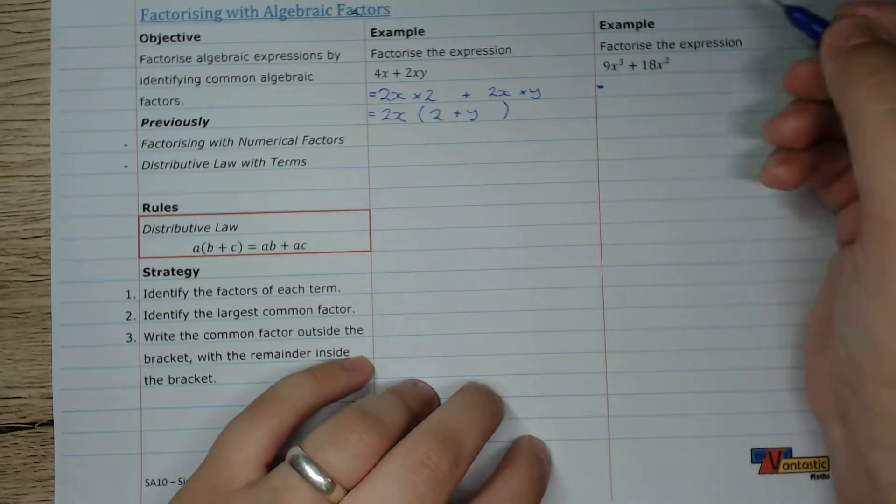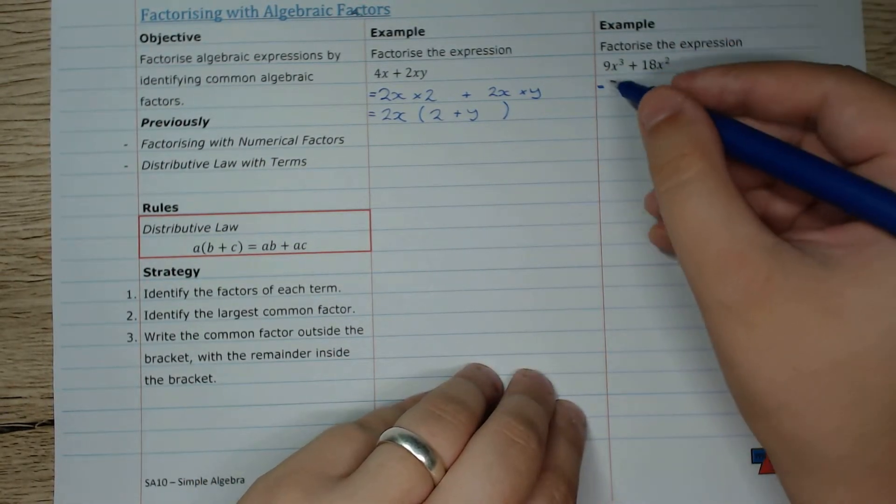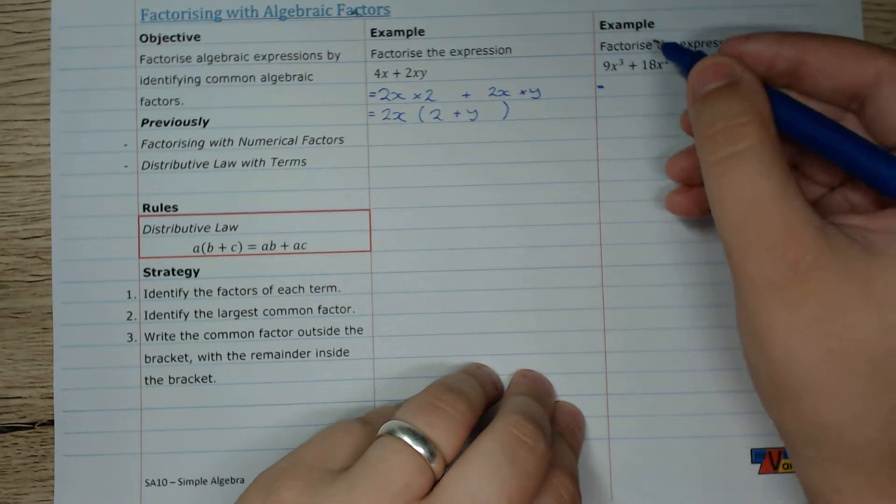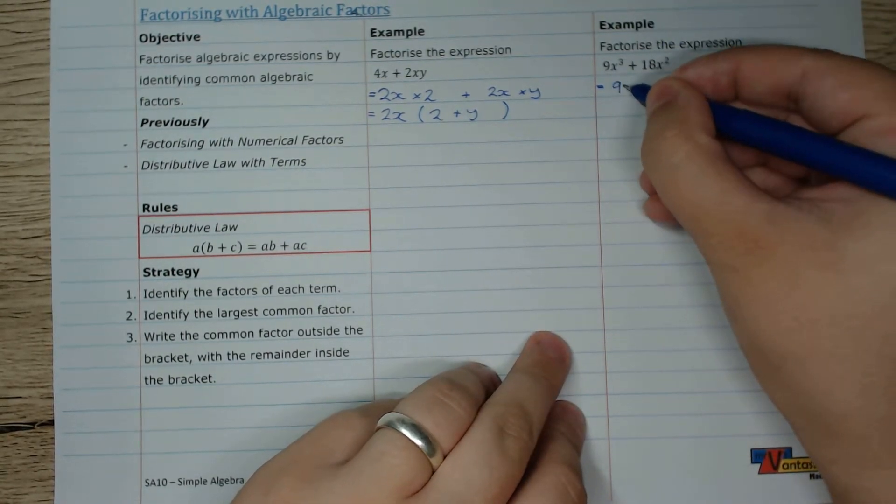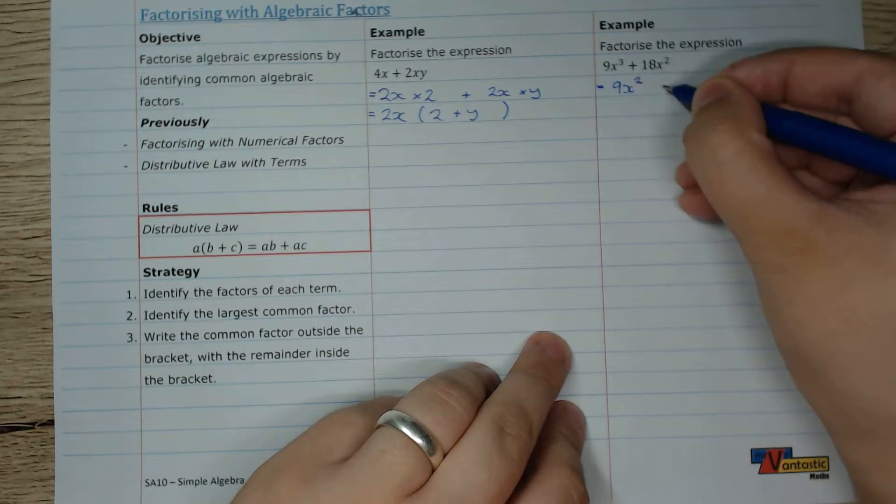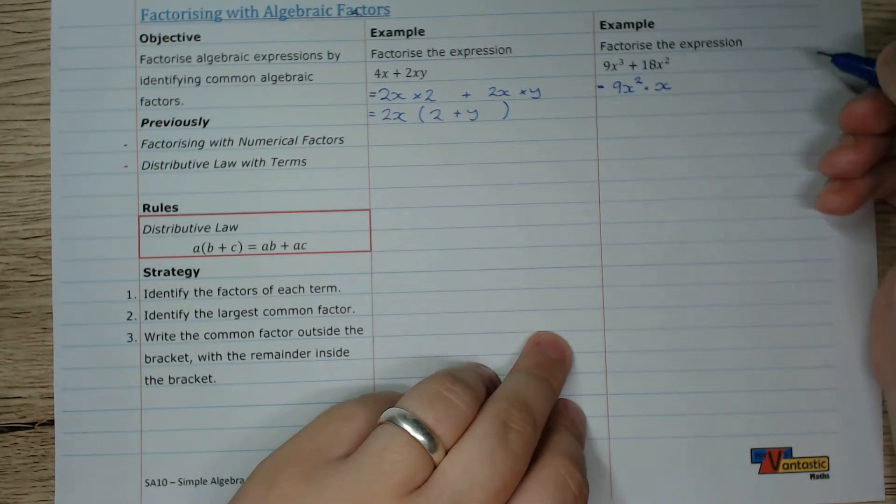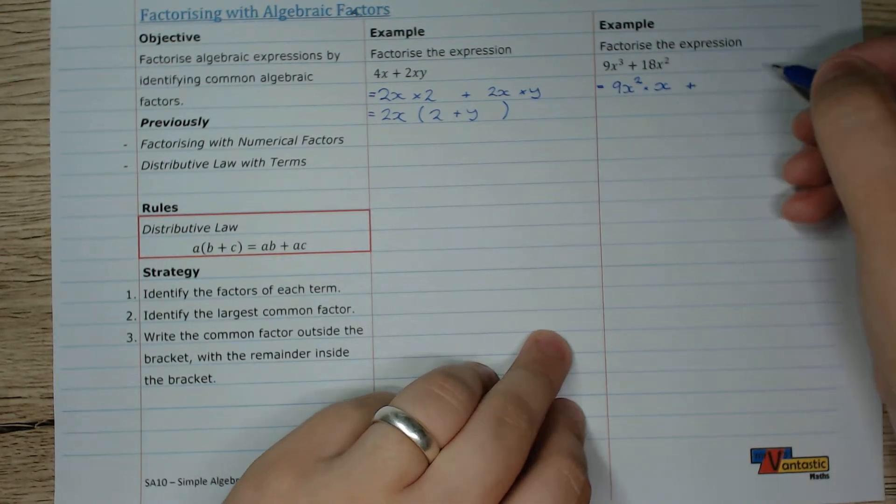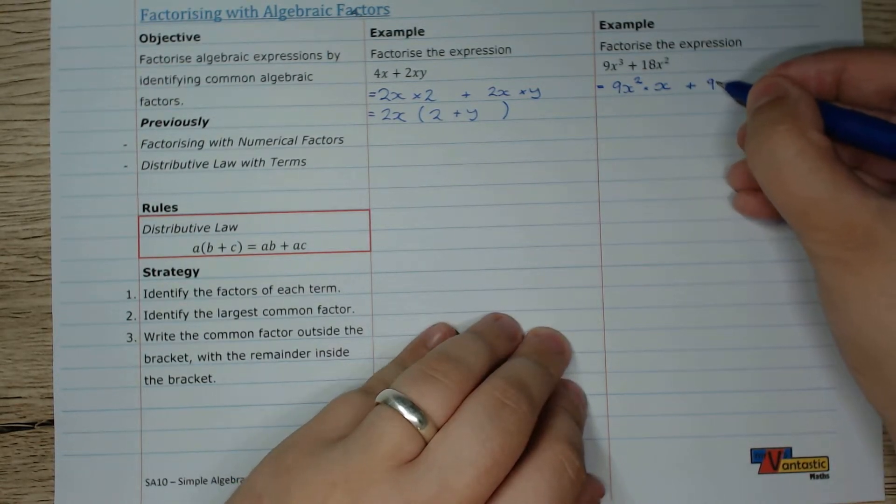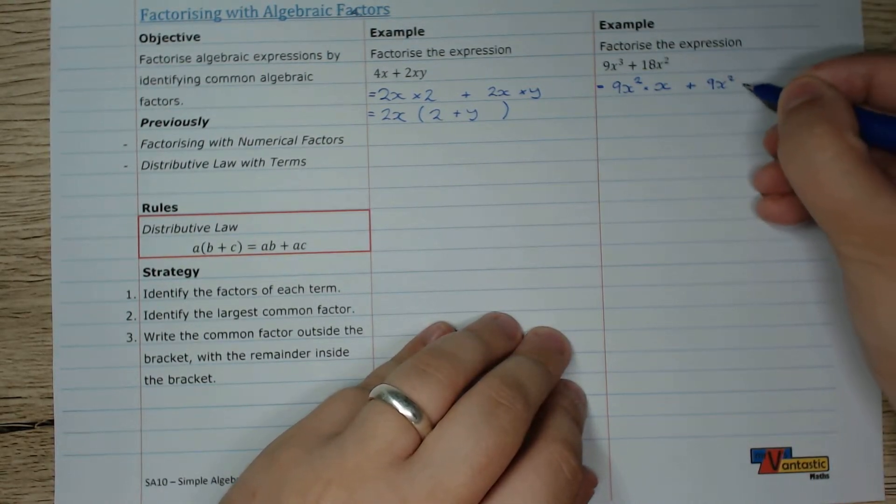So over here I can break up 9x cubed into 9x squared times x. And I can break 18x squared up into 9x squared times 2.